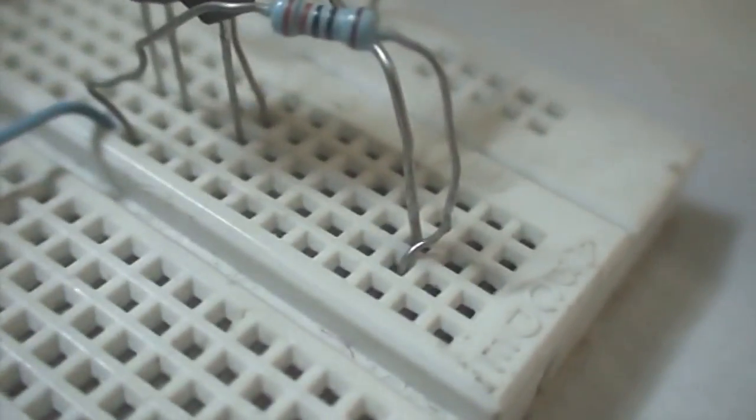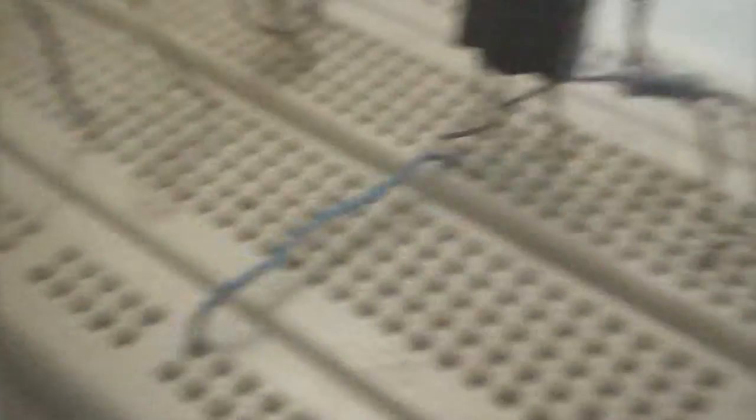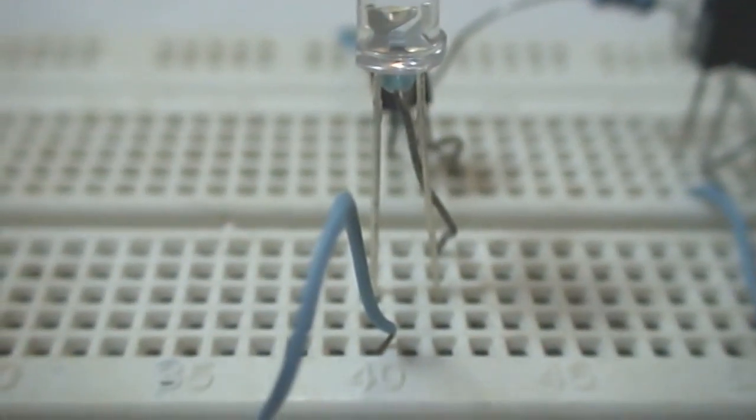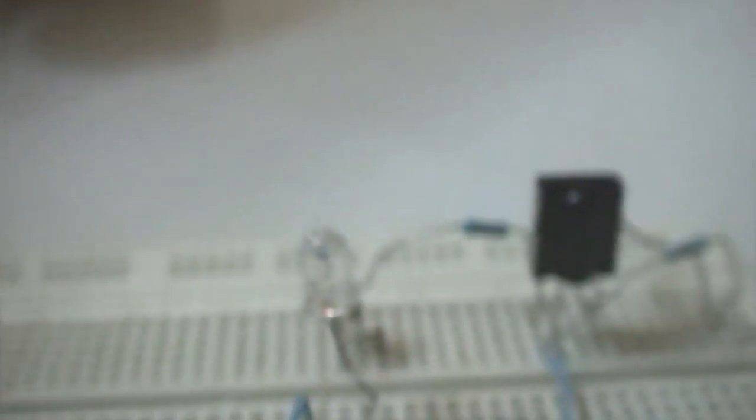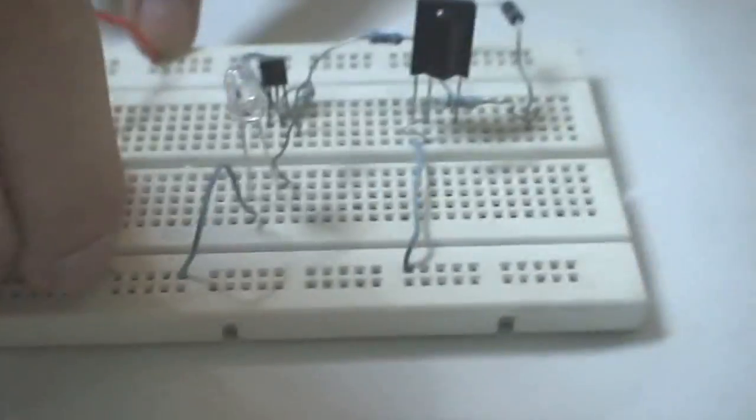We connect the cathode of the LED to the negative rail of the breadboard. Now we connect the 9V battery to the 9V battery clip. Insert the positive terminal to the positive rail of the breadboard and the negative terminal to the negative rail of the breadboard.